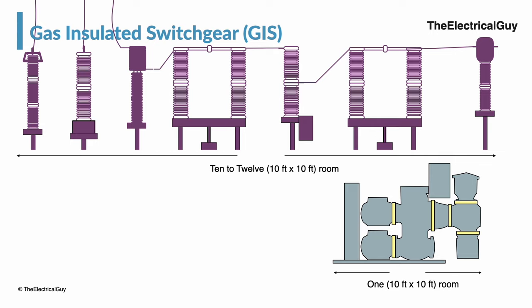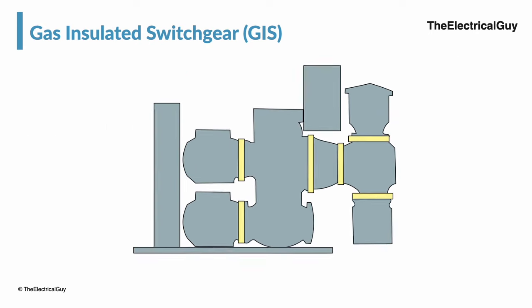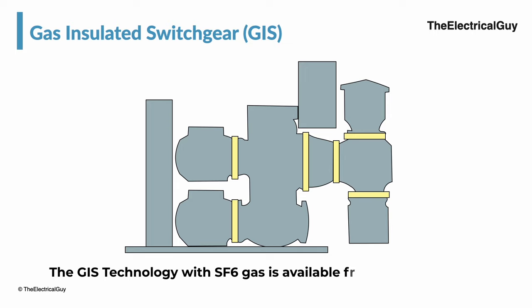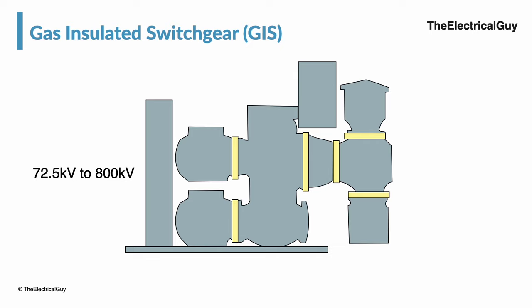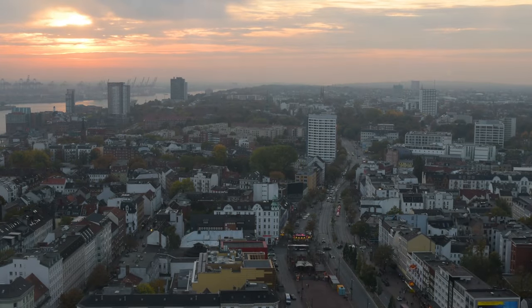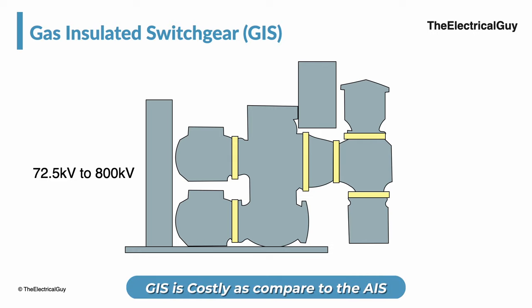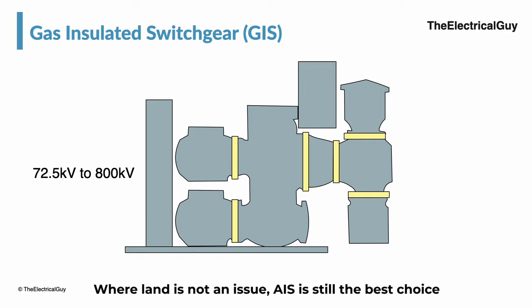GIS technology is not new — it has been available for more than 30 to 40 years. The GIS technology with SF6 gas is available from 72.5 kV up to 800 kV. This technology is preferred where space limitations exist, for example when building a substation in a densely populated city. However, this technology is much more costly compared to AIS, so in many cases where land is not an issue, AIS is still the best choice.